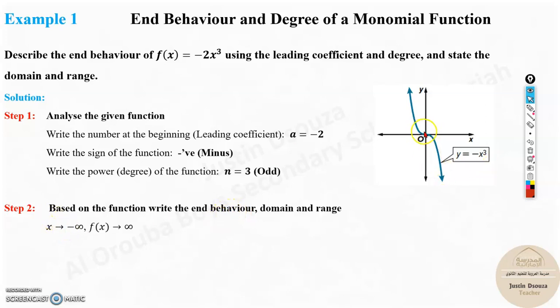The end behavior: as x is going towards negative infinity, the function is going to positive infinity. And as it moves to the positive infinity, it is going to negative infinity. If you're getting confused, again, I repeat, please go back to the first video, introductory video, where all the end behavior, domain range, and the graphs are explained. The domain is about the x-axis. It's all real numbers. And the range over here is also all real numbers, because it's going up and down.